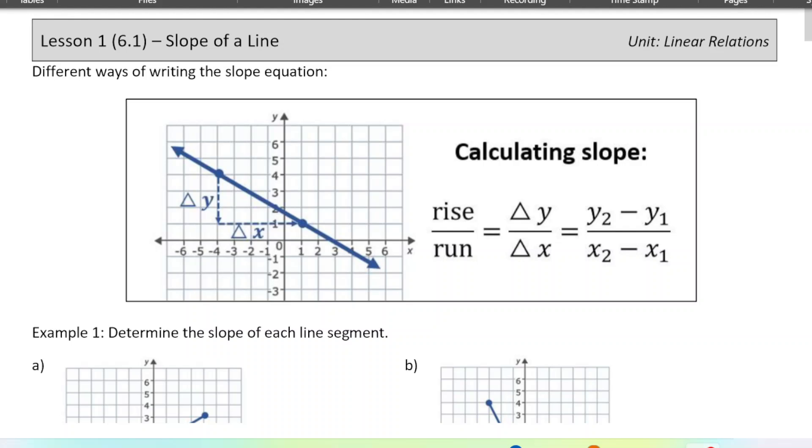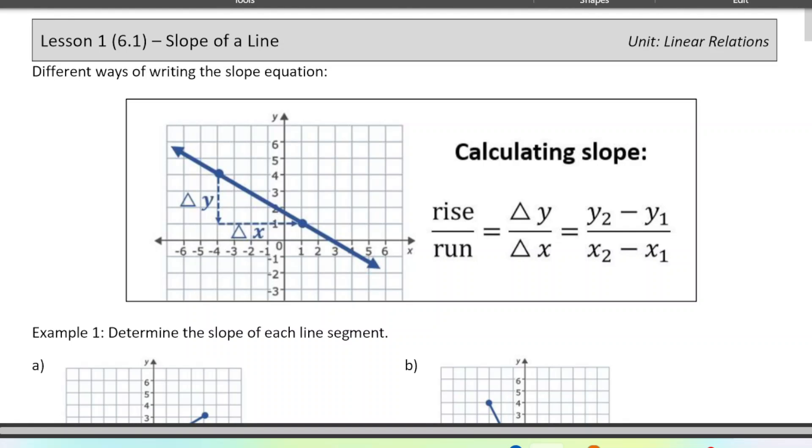This is lesson one of chapter six. We're doing slope of a line today, a bit of a review of the topics we looked at in the previous chapter, focusing on slope.